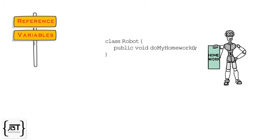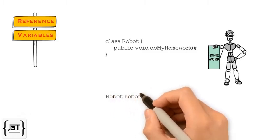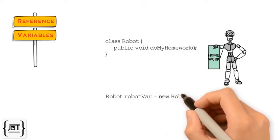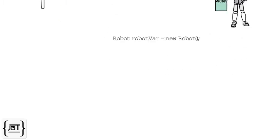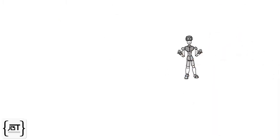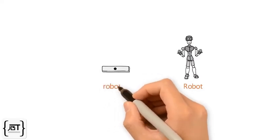To create an object, we will write the statement, Robot RobotVar is equal to NewRobot. This will first create an object of Robot in memory, and then assign the object to a variable, RobotVar of type Robot.